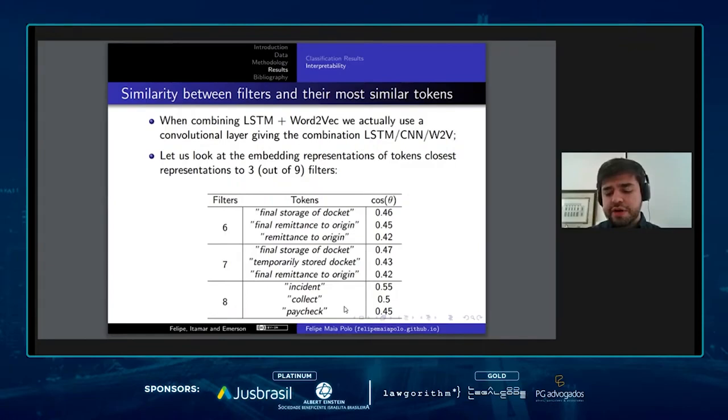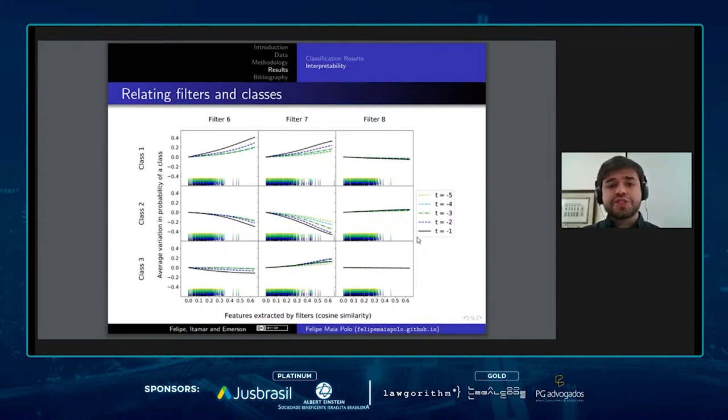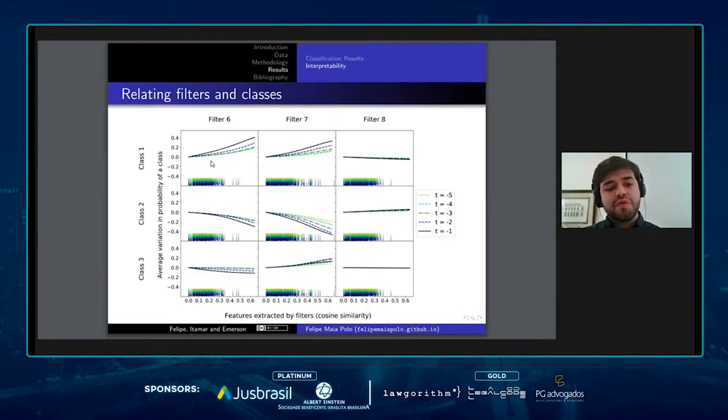We can confirm our intuitions looking at this plot here. For example, these are partial dependence plots. Looking at filter eight, you can see we have basically flat plots. That means that filter eight doesn't have a relationship with any of the three classes, while filter six and seven have a very strong relation with the model outputs for class one, two, and three.